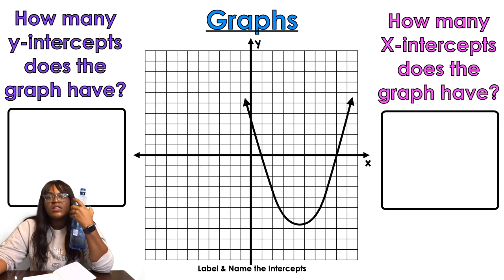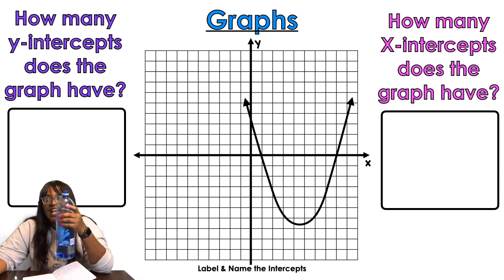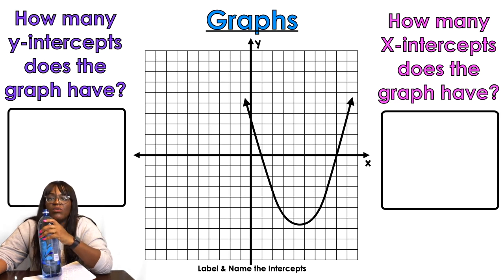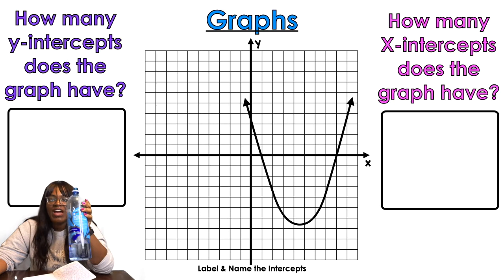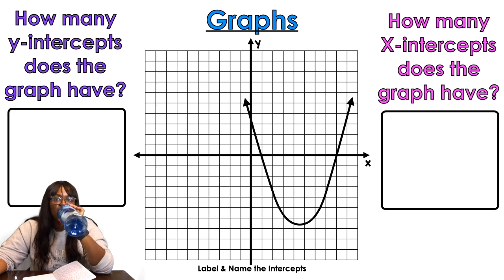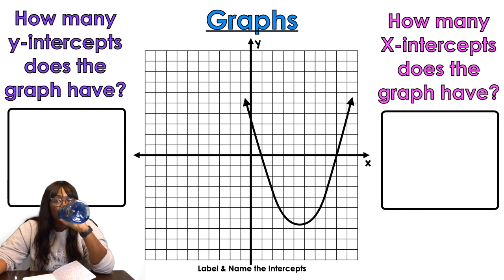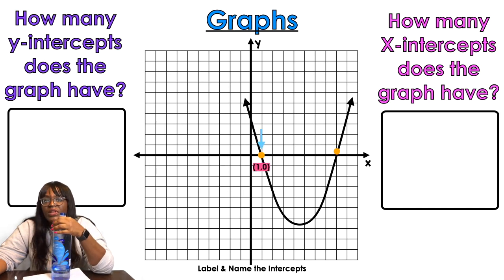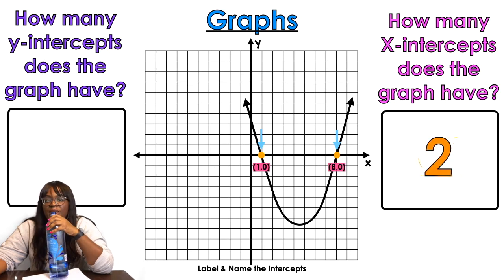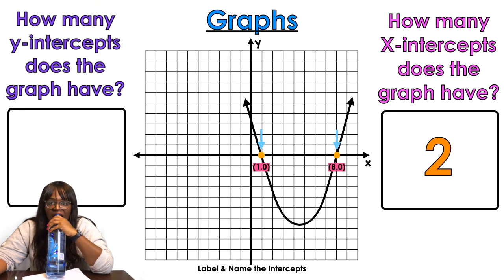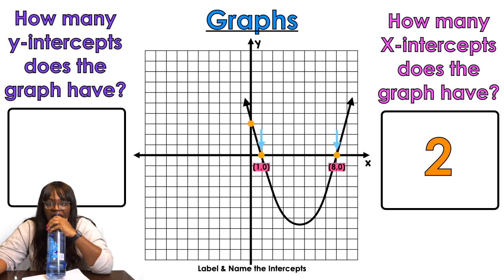All right, look, I've just moved the parabola over. It's a happy face again. What are we thinking? How many x-intercepts does the graph have? Make sure you label them also. What is the coordinate? Fantastic, so I'm gonna go ahead and put two for that one, and then what about our y-intercept? Very good, just one.